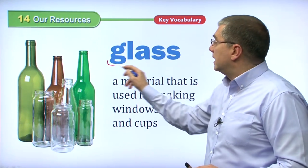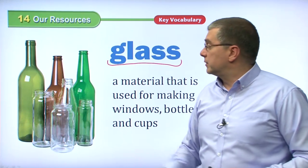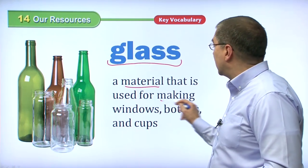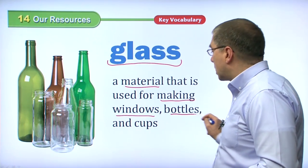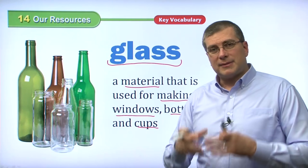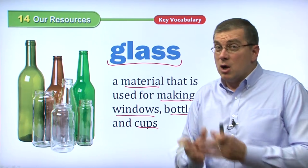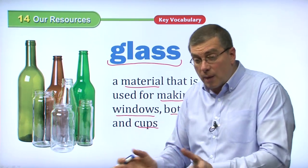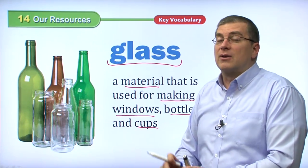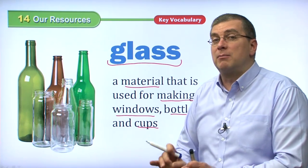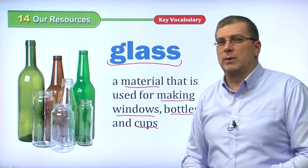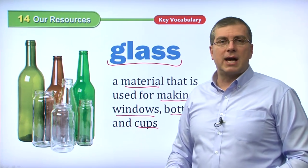Another material is glass. We can see many examples of using glass. Glass is a material used for making windows, bottles, and cups. Glass is very hard and lasts for a long time, but we have to be careful — if we drop it, it'll shatter, which is very dangerous. Don't pick up broken glass; it can be very sharp. So be very careful with glass. But glass can last a long time.